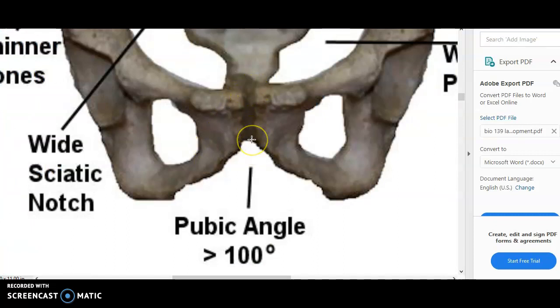This fibrocartilage allows for compression during childbirth. Muscles attached to the ilium actually are going to flare the ilium out. That's going to cause the two pubic bones to compress. So this is a symphysial joint made out of fibrocartilage, one of the two cartilaginous joints.